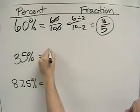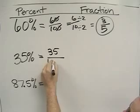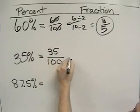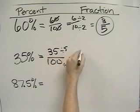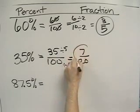For 35 percent, 35 percent means 35 per hundred, which means 35 over 100. We divide both the numerator and the denominator by 5, and we get 7 twentieths.